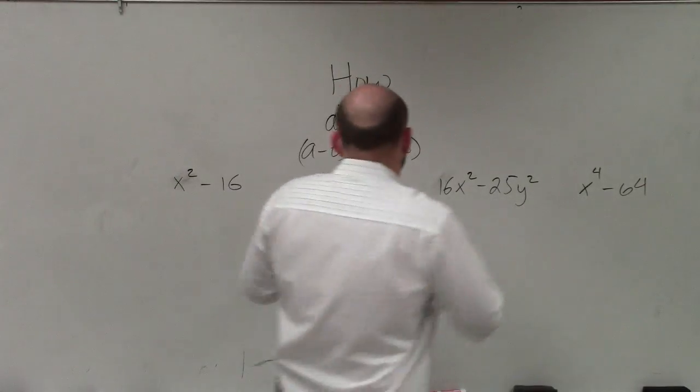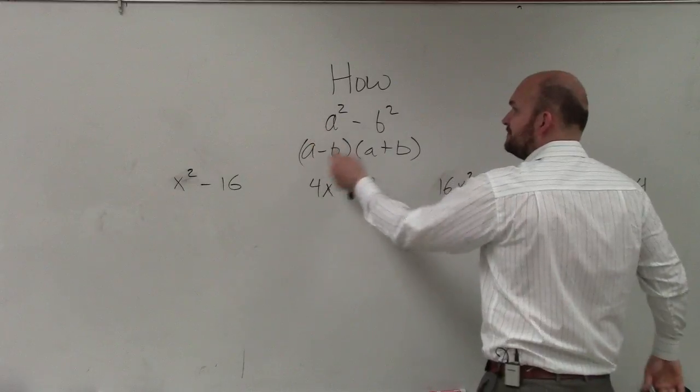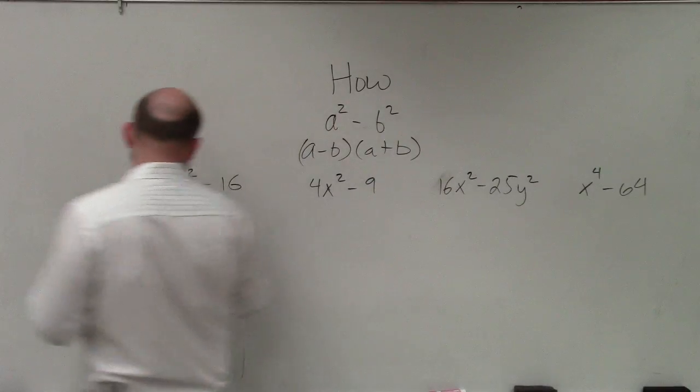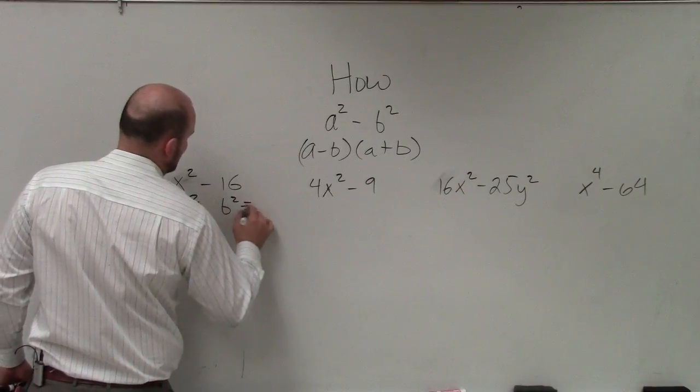When you're doing difference of two squares, if you have a square term minus another square term, you just want to figure out what a and b are. So in this case, we can say a squared equals x squared, and b squared equals 16.